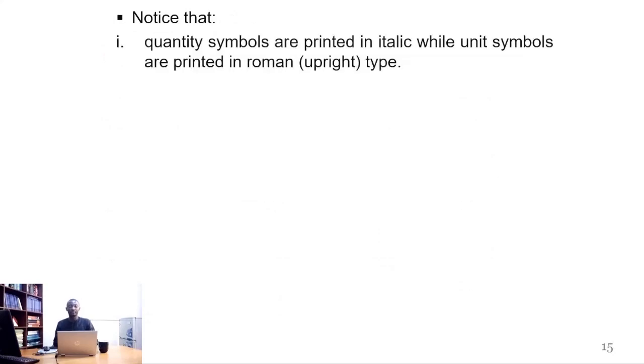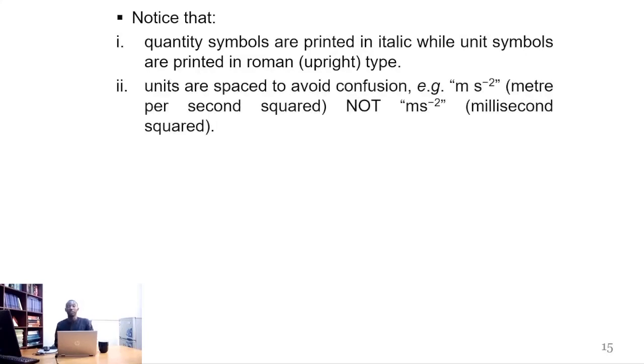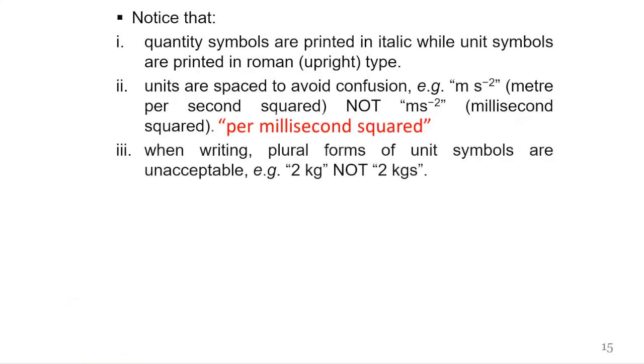You will notice that quantity symbols are printed in italic while unit symbols are printed in Roman or upright. Units are spaced to avoid confusion. For instance, meter per second squared is written with a space in between and pronounced meter per second squared with spaces in between. If you wrote this without a space, this would translate to millisecond squared, which is wrong.